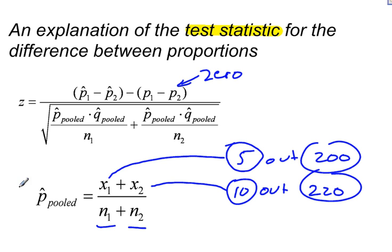This is called pooling your data. And the reason why we need to pool our data when we're working with a test statistic for the difference between proportions is because we don't have anything to go by. So we have to use something to create this standard error, and the thing that we have to use to create this standard error is the pooled p hat. This estimates...